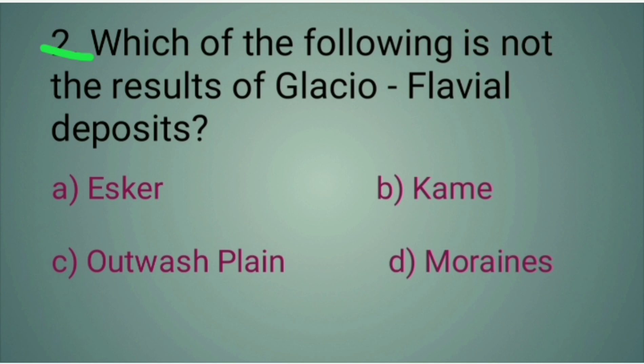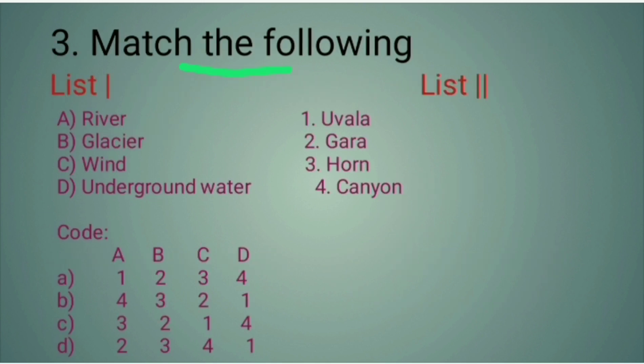Question 3: Match the following. List 1 and List 2 are given. A: River, 1: Uvala. B: Glacier, 2: Gara. C: Wind, 3: Horn. D: Underground water, 4: Canyon. The codes are: Option A: 1, 2, 3, 4. Option B: 4, 3, 2, 1. Option C: 3, 2, 1, 4. Option D: 2, 3, 4, 1.